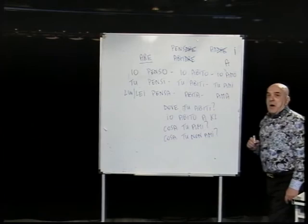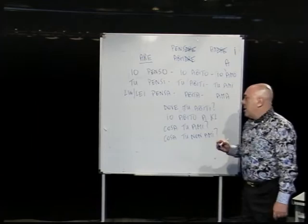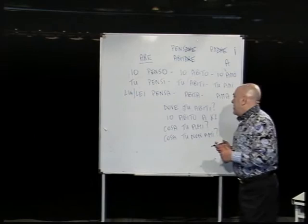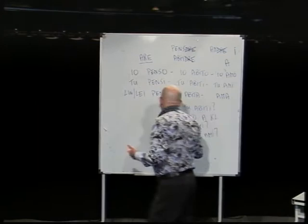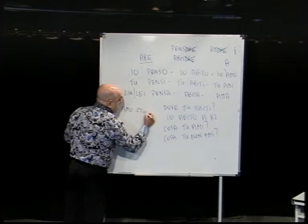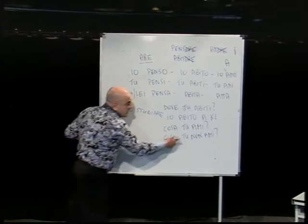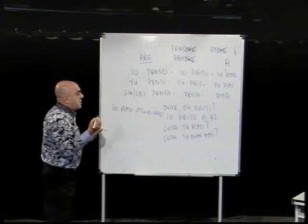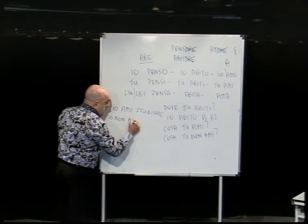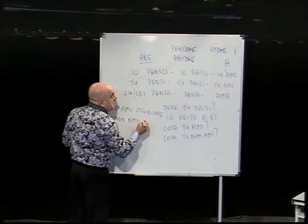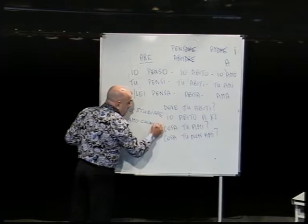Now I want you to answer. I am asking what do you like — you reply with something you like. For example: io amo studiare (I like to study). Studiare is a verb from the -ARE group meaning 'to study'. For what you don't like, you can say: io non amo cucinare (I don't like to cook).